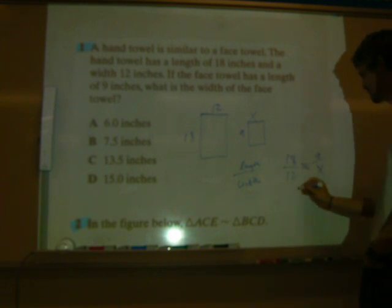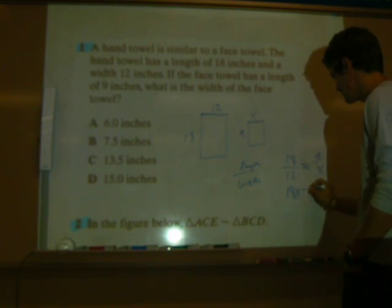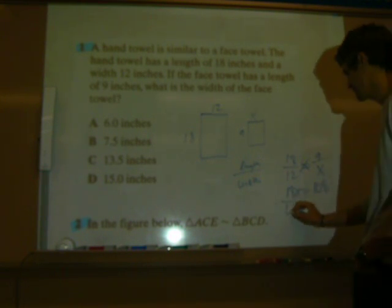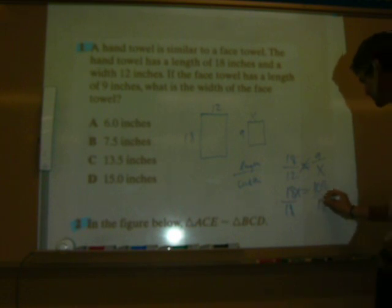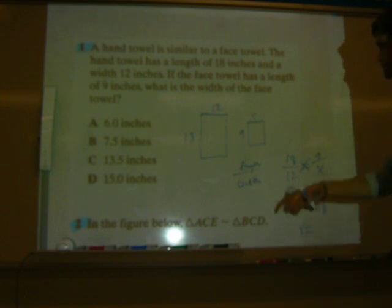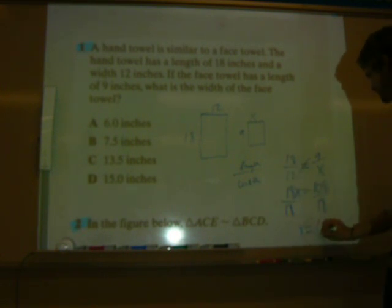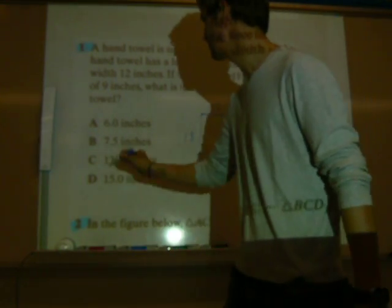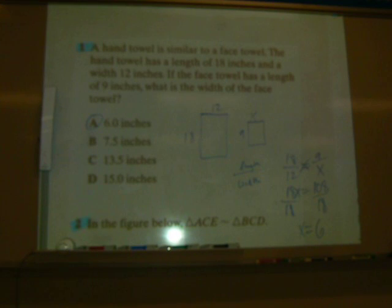Eighteen times x is 18x. Equals twelve times nine is 108. Now, I'm going to divide by 18. Do that in your calculator. 108 divided by 18, and you're going to find that x is going to come out to be six inches. You can check it. Six times eight is 48. Six times ten is 60. 48 and 60 make 108. There's another way to check it. Therefore, your answer choice is going to be A.